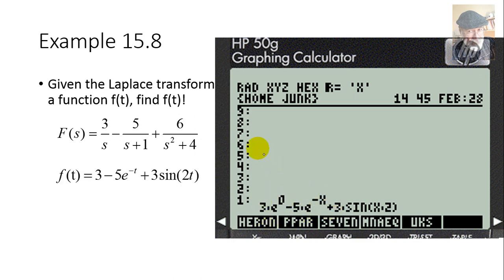Let's write it. First term, 3. 3 e to the 0. Of course, that is 3, right? Minus 5 e to the negative T. Minus 5 e to the negative T. Plus 3 times sine of 2T. So far, that is example 15.8 in the textbook.